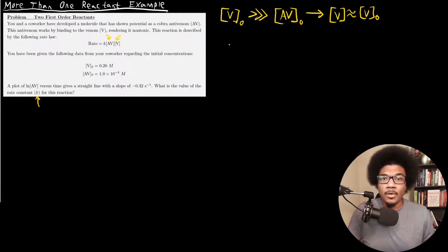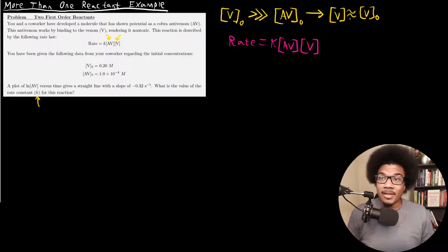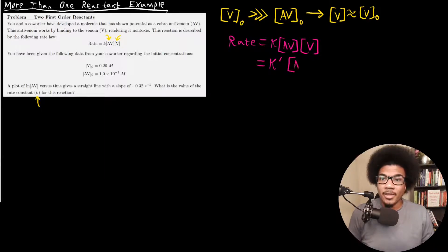From the problem, the rate equation is: rate = K·[AV]·[V]. But since we're assuming [V] is roughly constant throughout this reaction, we can rewrite this as a pseudo rate constant times the concentration of the antivenom: rate = K'·[AV]. That's going to be our pseudo rate expression.